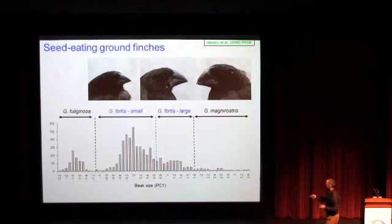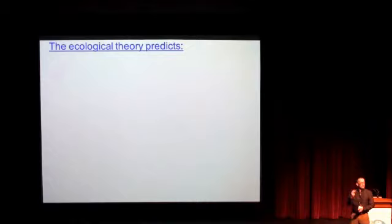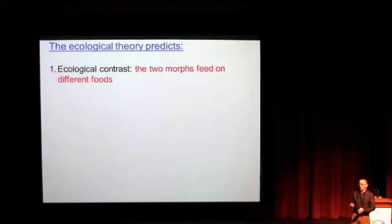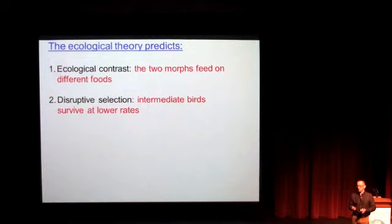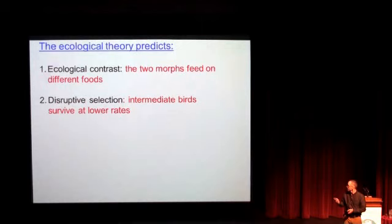What would theory predict if adaptation is driving speciation in this group? Let's make four predictions. First, the two morphs within the one species should feed on different foods — there should be an ecological contrast. Second, they should be under disruptive selection, in the sense that intermediate birds should survive at lower rates — that dip I showed you in the distribution. Third, because beaks are important for the production of song, and song is how females make choices, we would expect mating isolation — each morph should prefer to mate with its own morph.